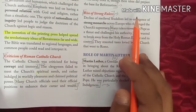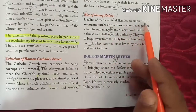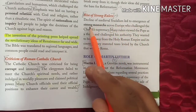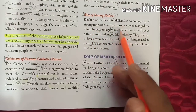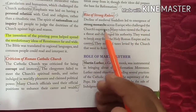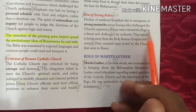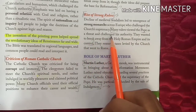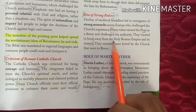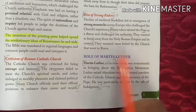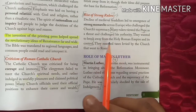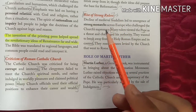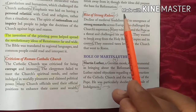Rise of strong rulers: the decline of medieval feudalism led to the emergence of strong monarchs across Europe who challenged the church's supremacy. Many rulers viewed the Pope as a threat to their authority. They wanted to break away from the Holy Empire and its control, and they resisted the taxes levied by the church.